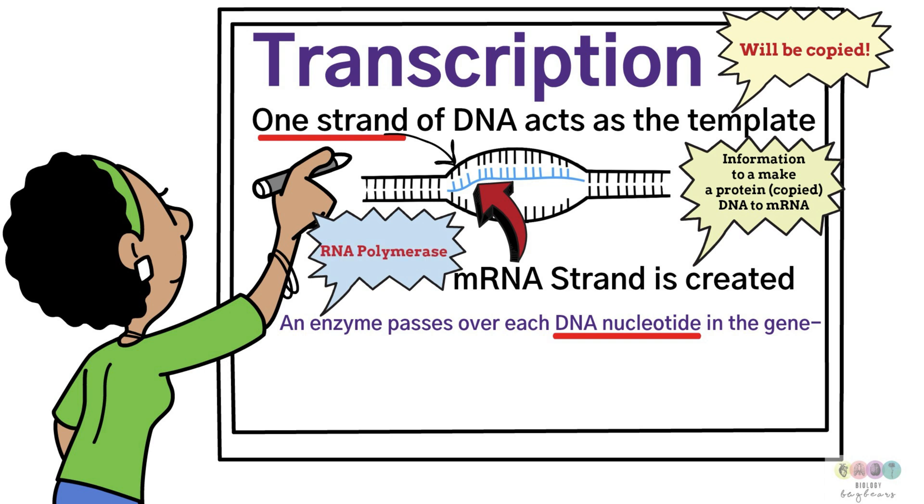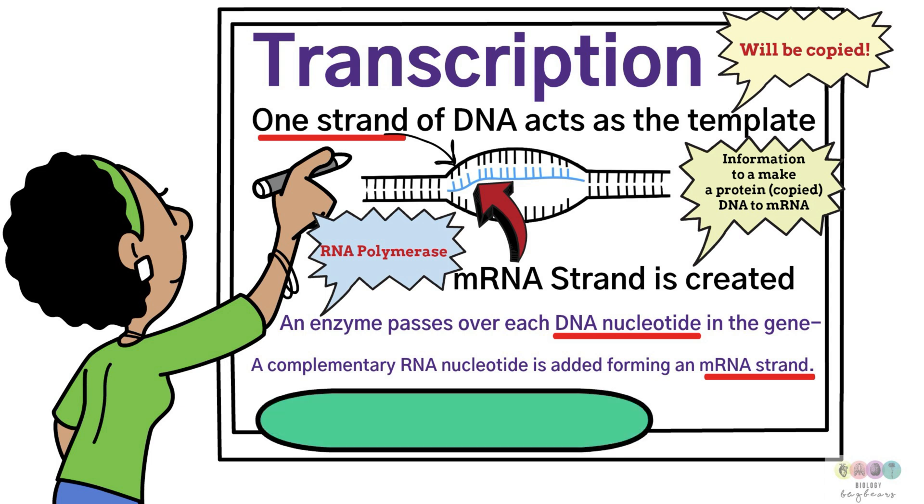The molecule in blue there in the diagram. And this is all possible because an enzyme passes over each of those exposed DNA nucleotides in the gene and the enzyme is RNA polymerase and it ensures that a complementary RNA nucleotide is added in just the right way forming a messenger RNA strand. And this is all based on complementary base pairing.